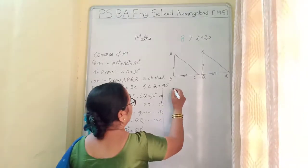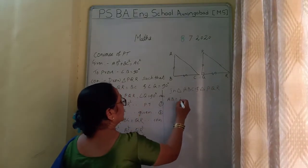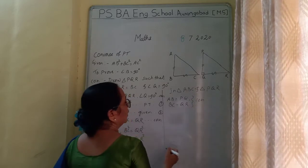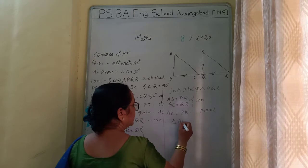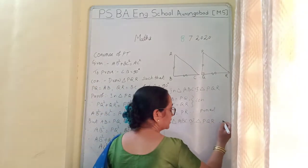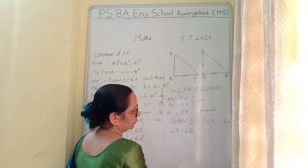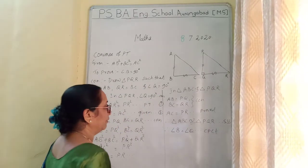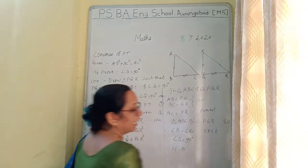In triangle ABC and triangle PQR, we have AB equals PQ and BC equals QR by construction, and AC equals PR by proof. Therefore, triangle ABC is congruent to triangle PQR by SSS. Therefore, angle B equals angle Q by CPCT — corresponding parts of congruent triangles. Therefore, angle B equals 90 degrees. Hence proved.